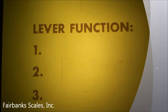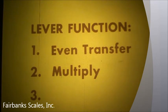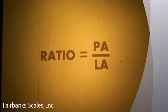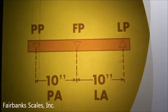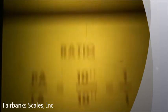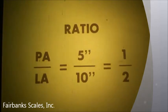A lever can do three jobs relative to the force applied: it can transfer the force evenly, multiply the force applied, or reduce the force applied. You can determine a particular lever's function using its ratio or multiple. The ratio of a lever is a comparison of the power arm to the load arm. Here is a lever with a power arm of 10 inches and a load arm of 10 inches — the ratio is 10 over 10, which reduces to a ratio of one to one. A lever with a power arm of five inches and a load arm of 10 inches has a ratio of five to ten, which reduces to one to two.